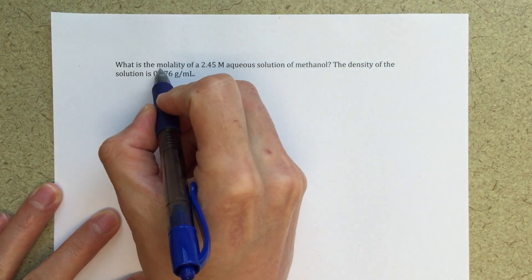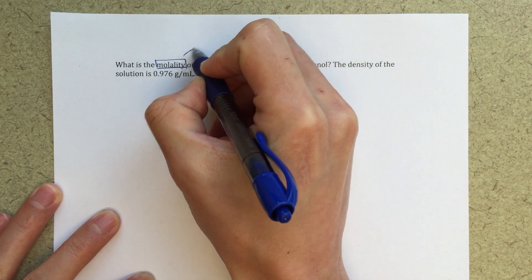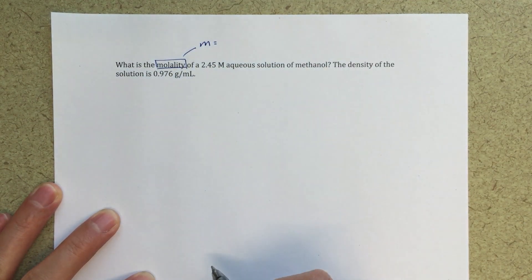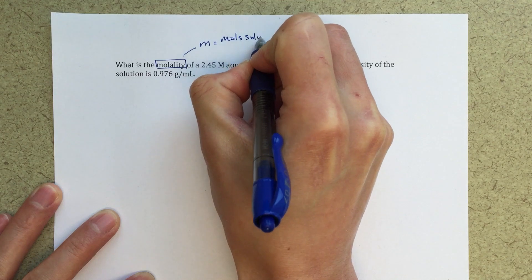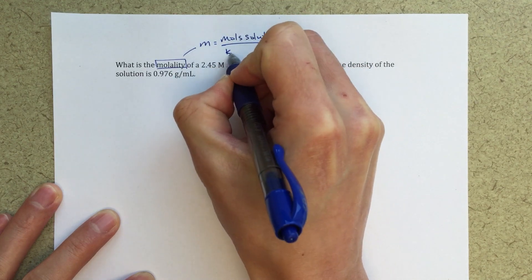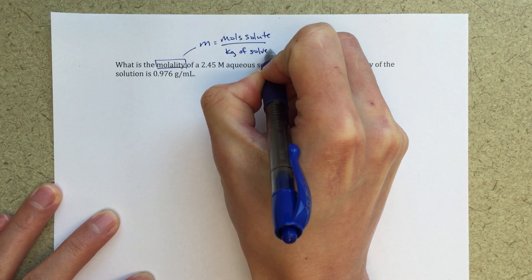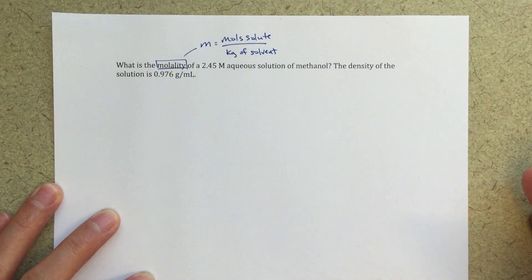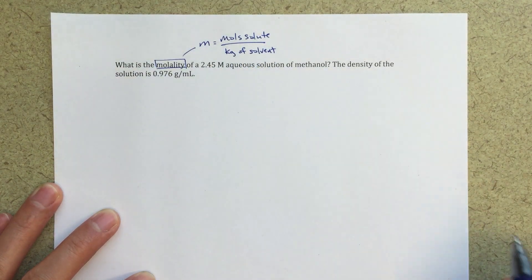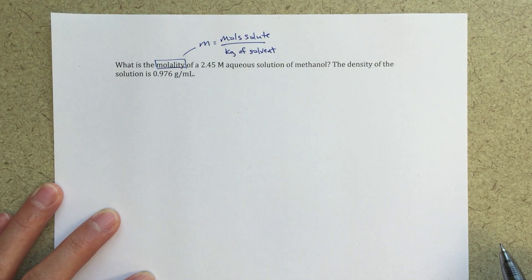So the first thing, we need to define molality. Molality is that little lowercase m, and that's going to be the moles of solute over the kilograms of solvent. So we're going to have to separate out the solute and the solvent in our mass of our solvent that we're going to use there in the denominator.